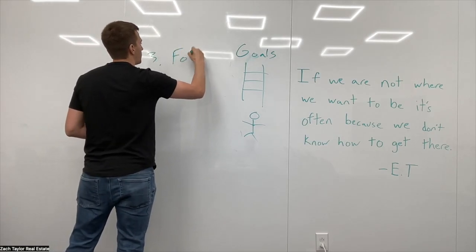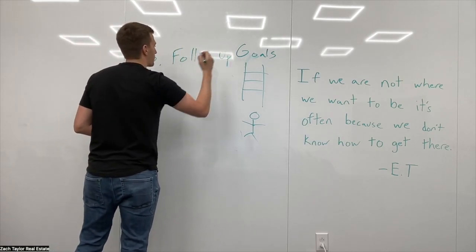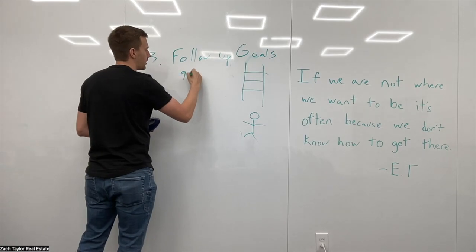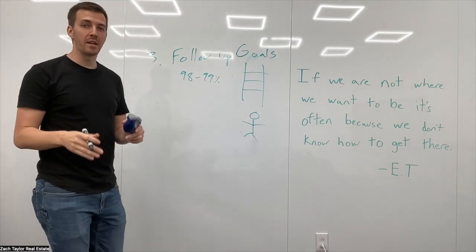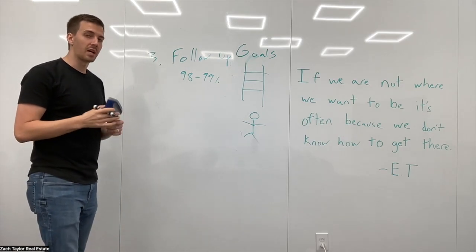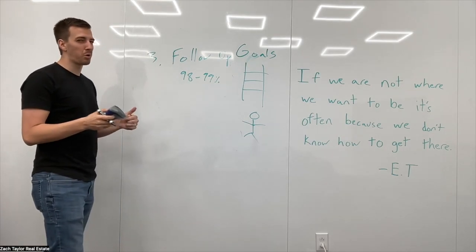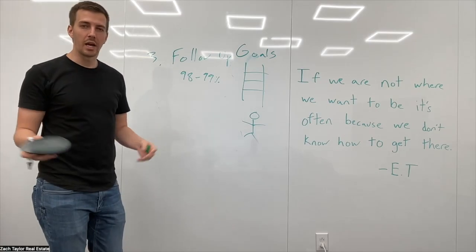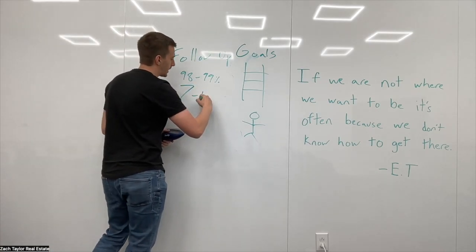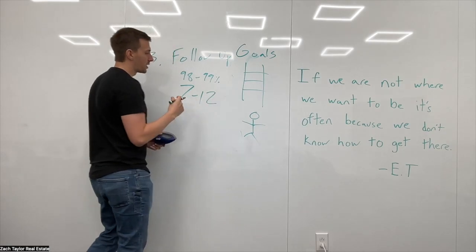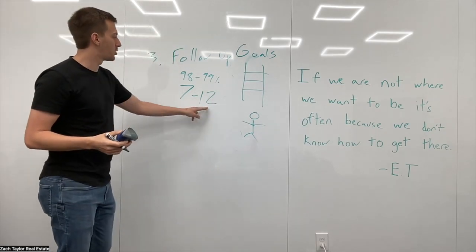We know statistically 98 to 99% of sales are not made on the first contact with people. First time you talk to somebody statistically, they're probably not going to agree to sell their house with you or buy a house. So we have to follow up. And then again, statistically, most sales are made on the seventh to 12th contact.